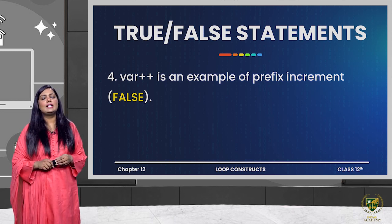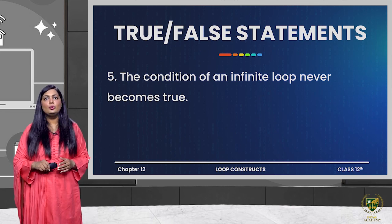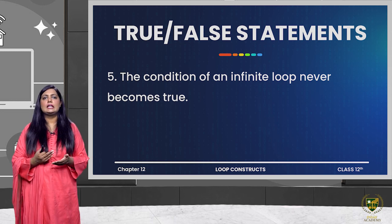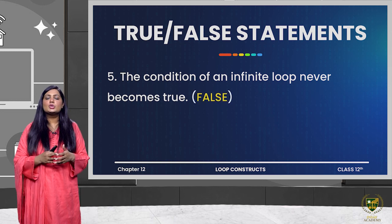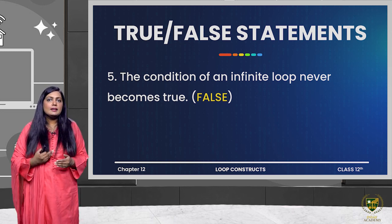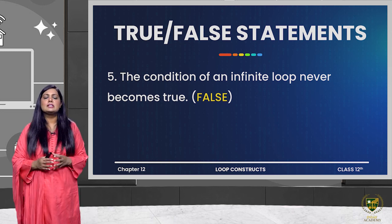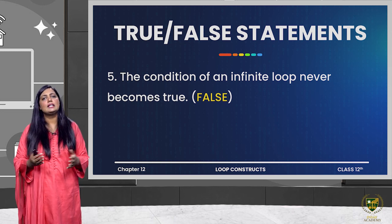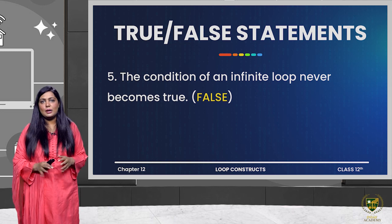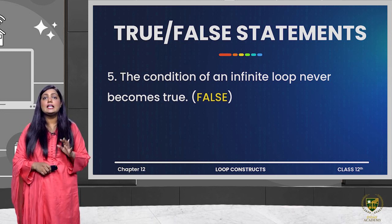The next question: the condition of an infinite loop never becomes false. It says the condition never becomes true — is this possible? It is not even possible; if the condition of the infinite loop is not true, then the loop will not execute. The loop is infinite only when the condition never becomes false. When in your program — whether intentional or unintentional — the condition never becomes false, the program keeps executing infinite times without stopping. So this statement as written is false.